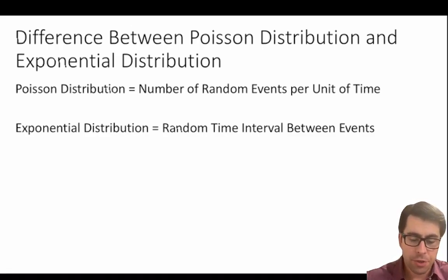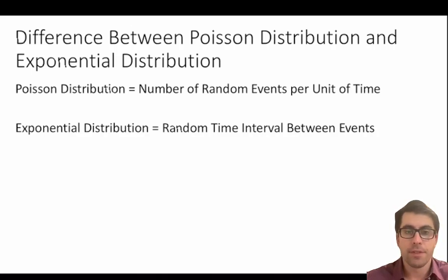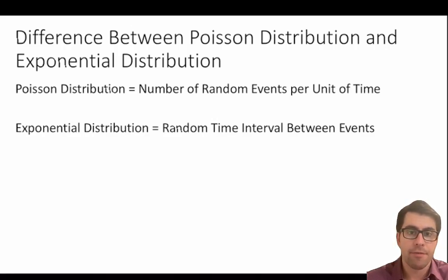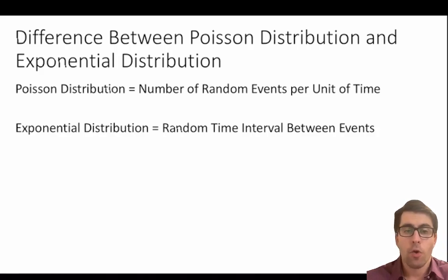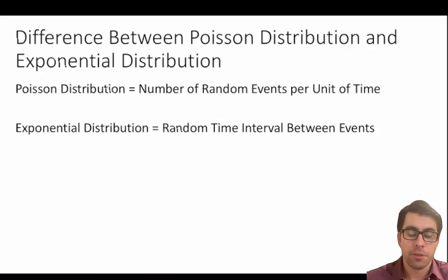A Poisson distribution is used to model the number of random events per unit of time — the number of bees that arrive at a flower in five minutes, the number of cars that arrive at a drive-through in one hour, the number of patients that arrive at the hospital in a day, or the number of tornadoes that happen in a month. All of those could be modeled using a Poisson distribution.